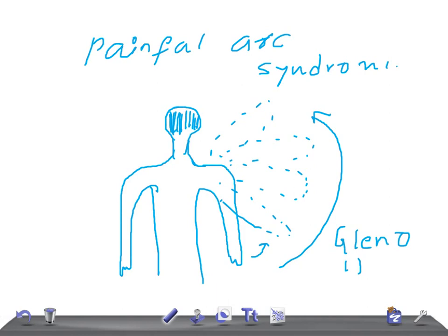Why is there pain during this abduction? The space between the upper end of the humerus and the acromion gets compressed. During mid-abduction, the tendon of the rotator cuff gets nipped between the greater tuberosity and the acromion process — that is the upper end of the humerus and the acromion gets compressed — and hence this painful arc results.